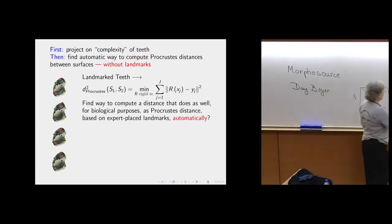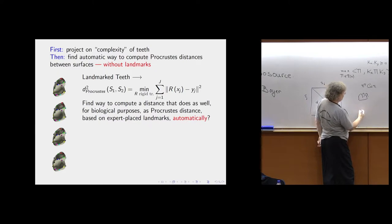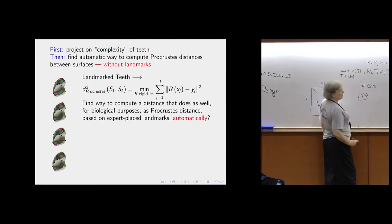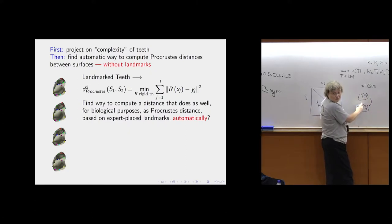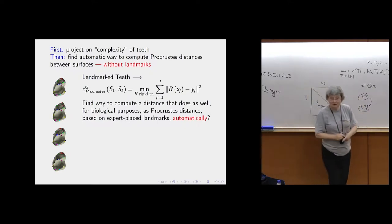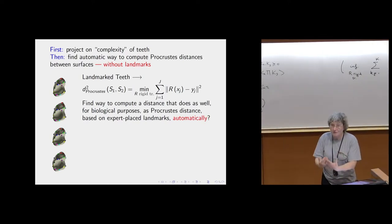We would look at certain teeth. Some of our methods lead to a mapping, so we would take correct landmarks on one tooth, transform them via the mapping to another tooth, and compare on the new tooth where the observer had placed landmarks with our propagated landmarks. Importantly — and this is important to biologists — we decided before doing the study what our measures of success would be.